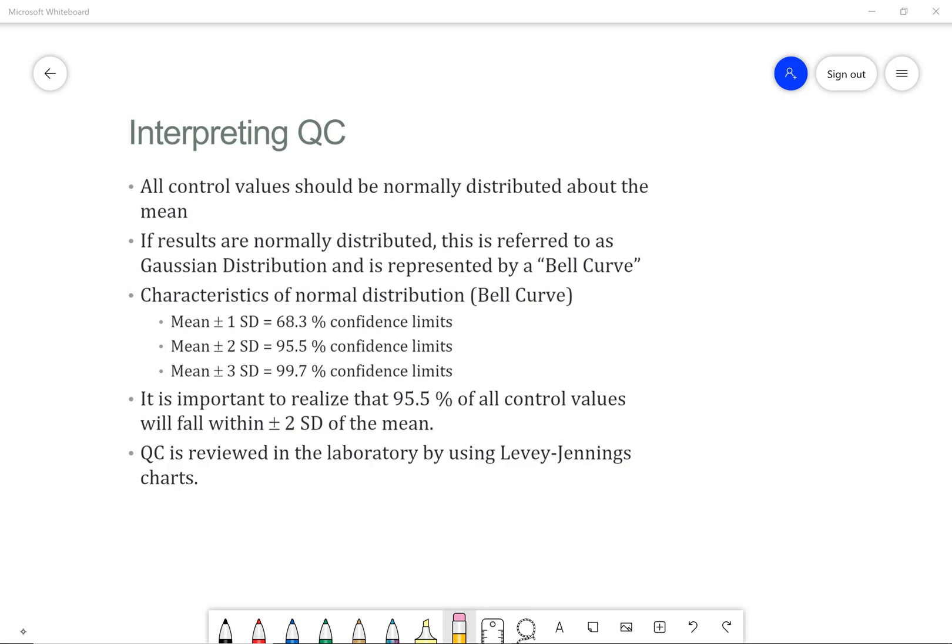But just know, quality control is used to determine precision and accuracy in our laboratory. So all control values should be normally distributed about the mean, which means that they fall on each side of that range. If the results are normally distributed, that's referred to as Gaussian distribution, and it's represented by a bell curve.